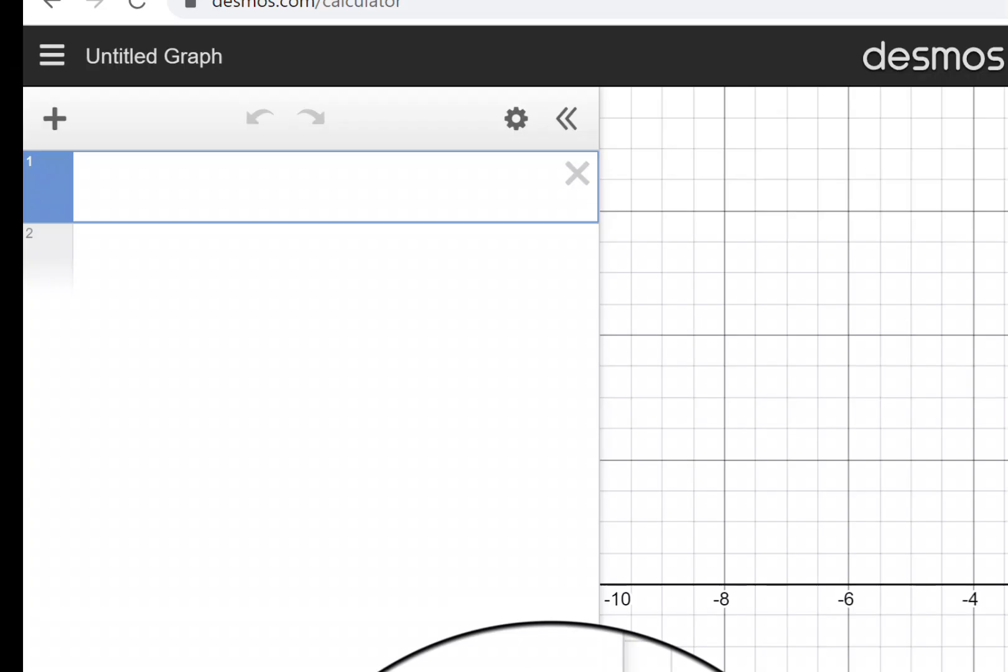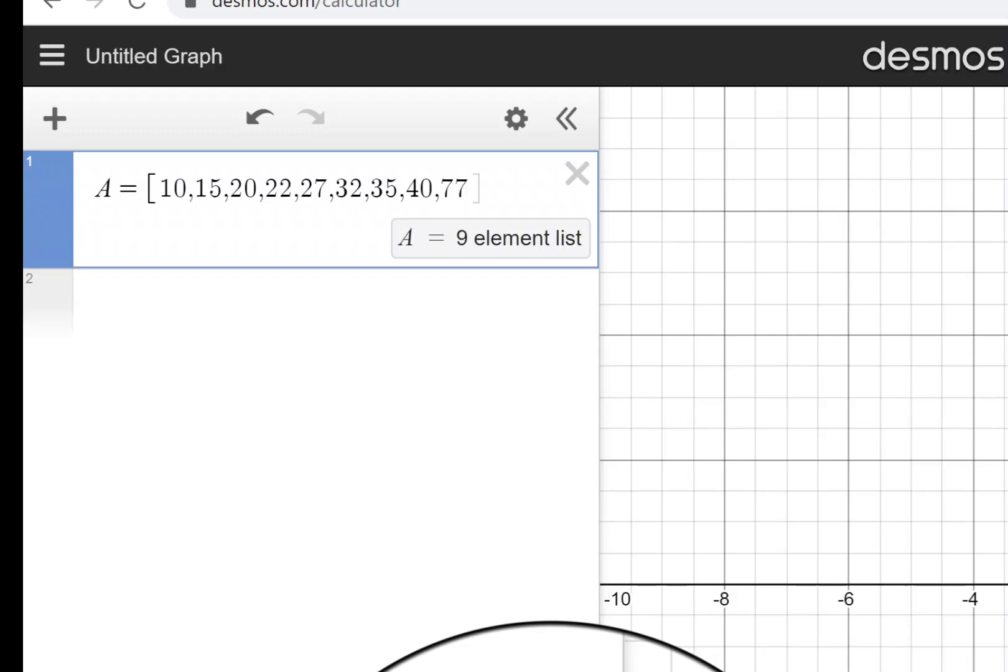I like to use lists when I'm doing statistics in Desmos, so I'm going to start by saying A is equal to, and I'm going to type in my numbers 10, 15, 20, 22, 27, 32, 35, 40, and 77. Between data values, I put a comma, and notice that Desmos keeps track of how many elements I have in my list.